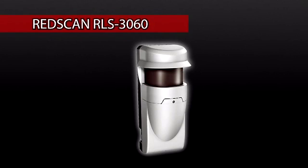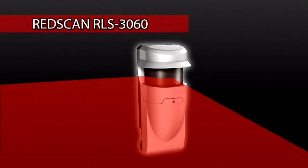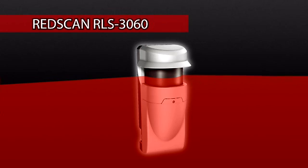The Red Scan RLS-3060 is a laser scan detector. It can detect a moving object's size, speed, and distance from the detector and process that information with a unique algorithm for reliable detection.